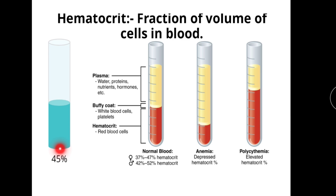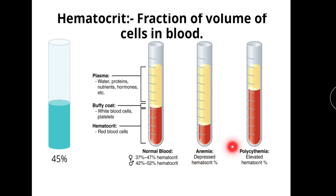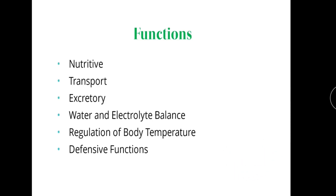The normal hematocrit value — that is, the packed cell volume — is 45%. Its clinical use: hematocrit is decreased in anemia due to reduced RBCs, and increased in polycythemia due to increased blood cells.